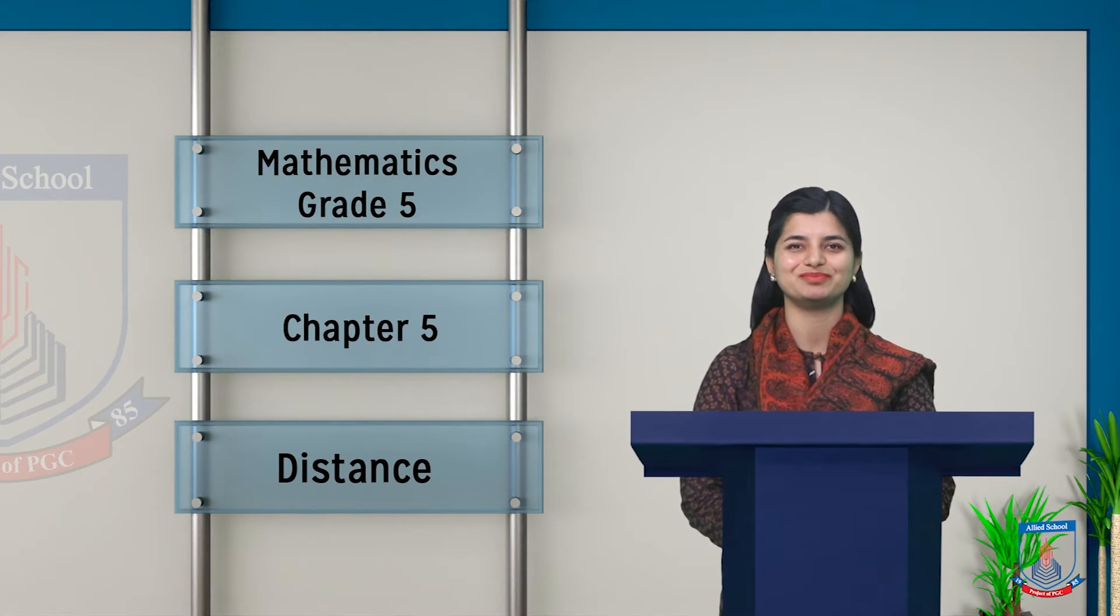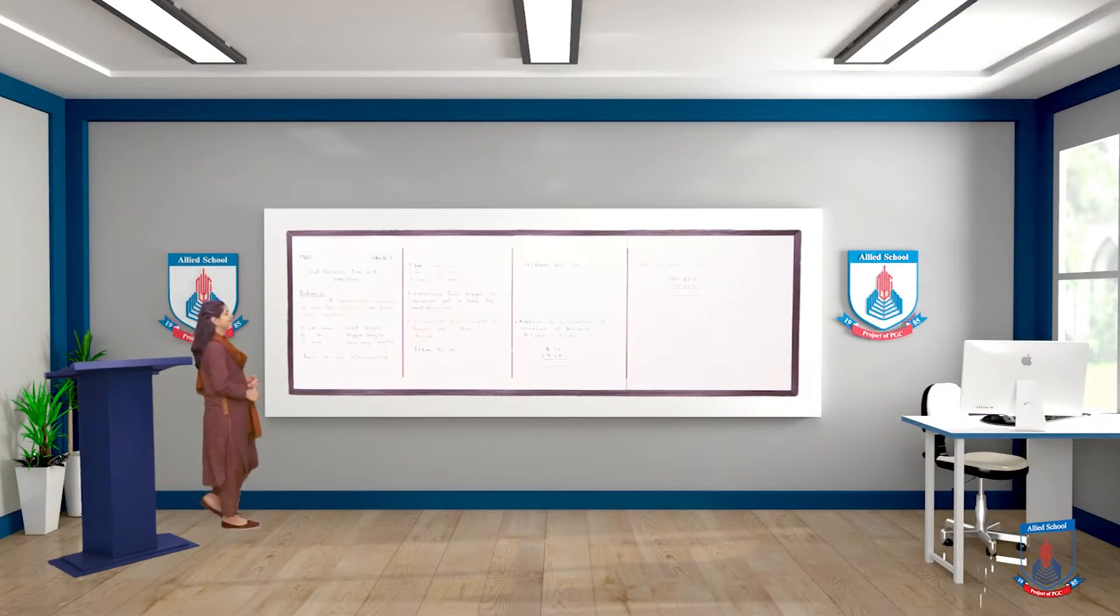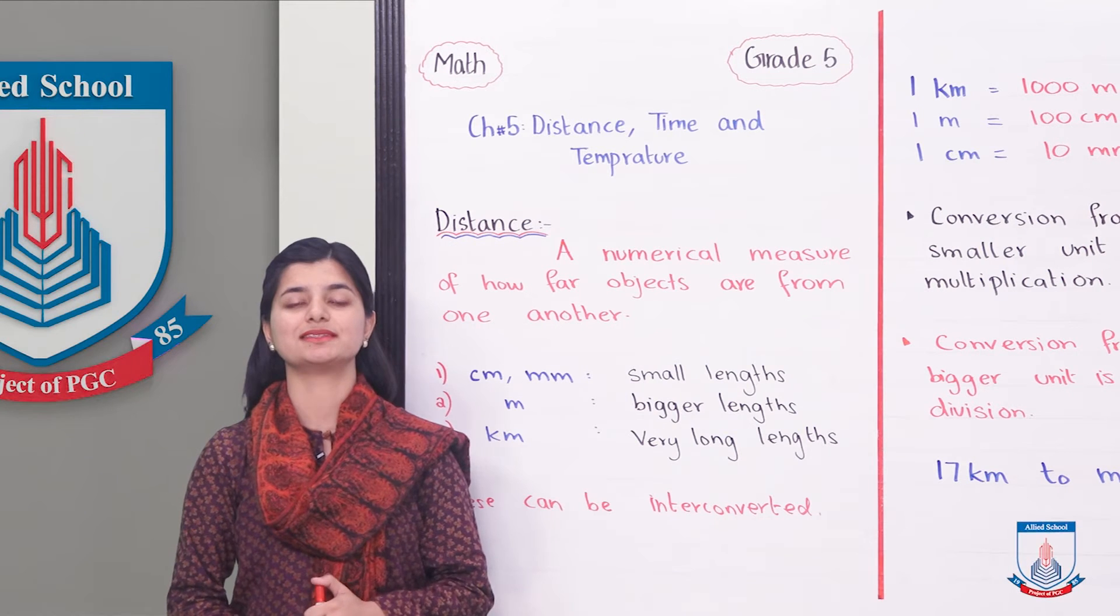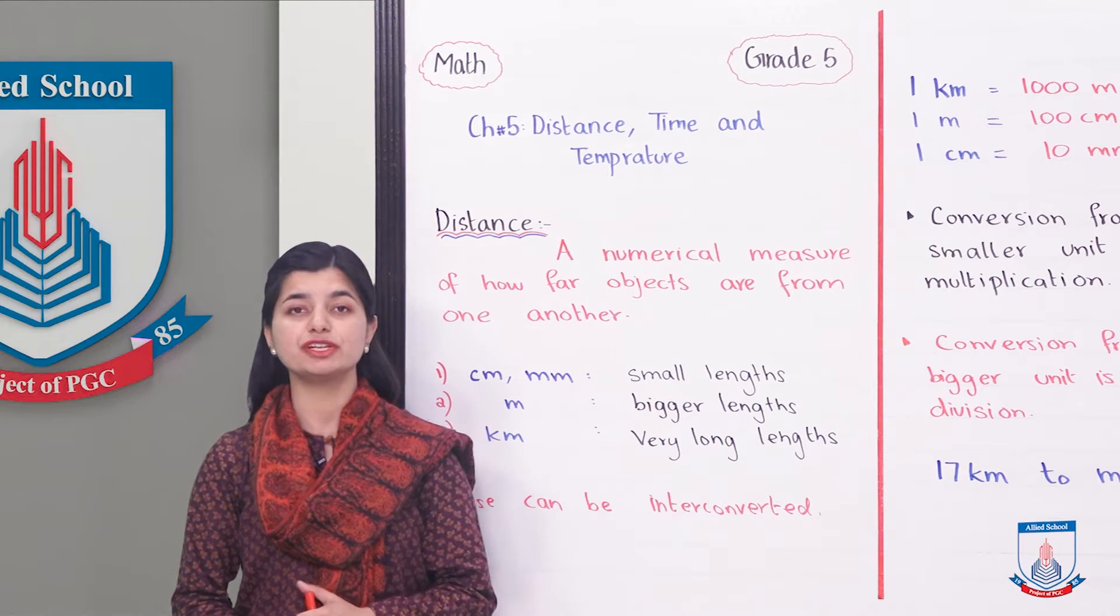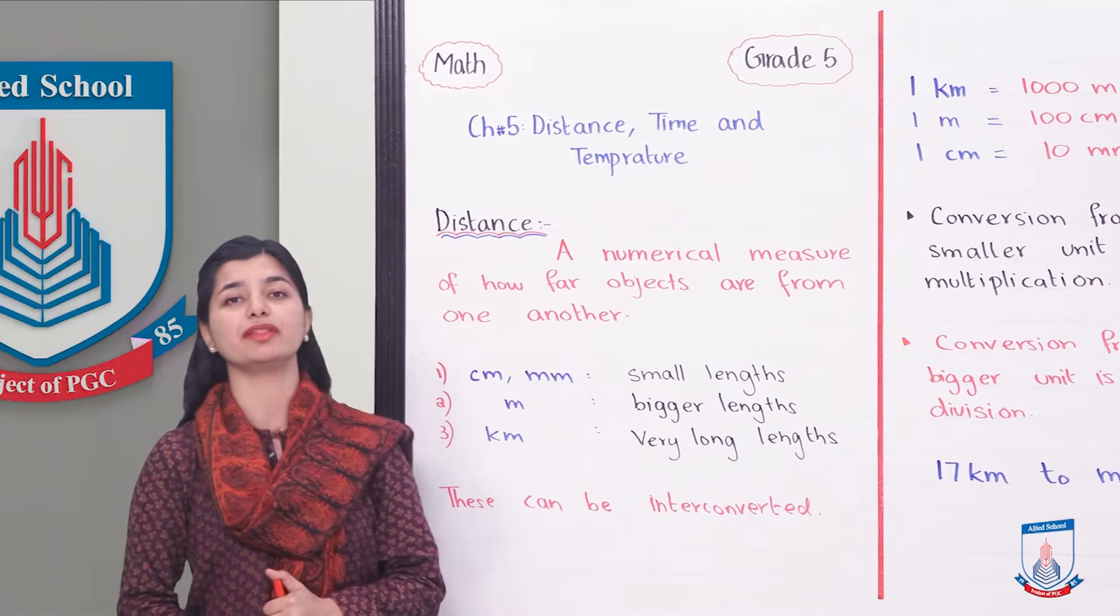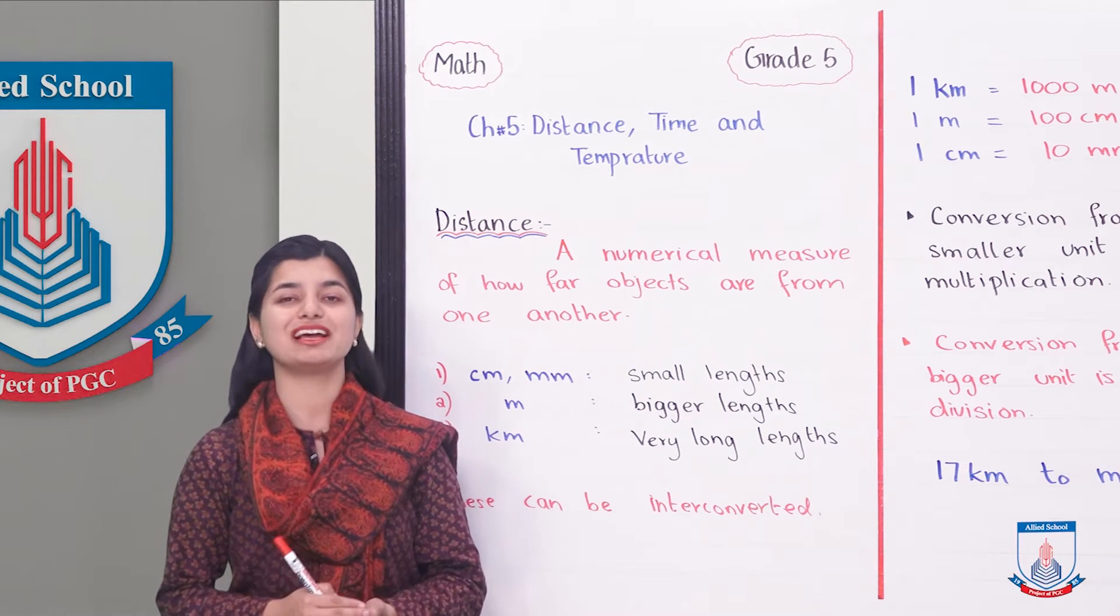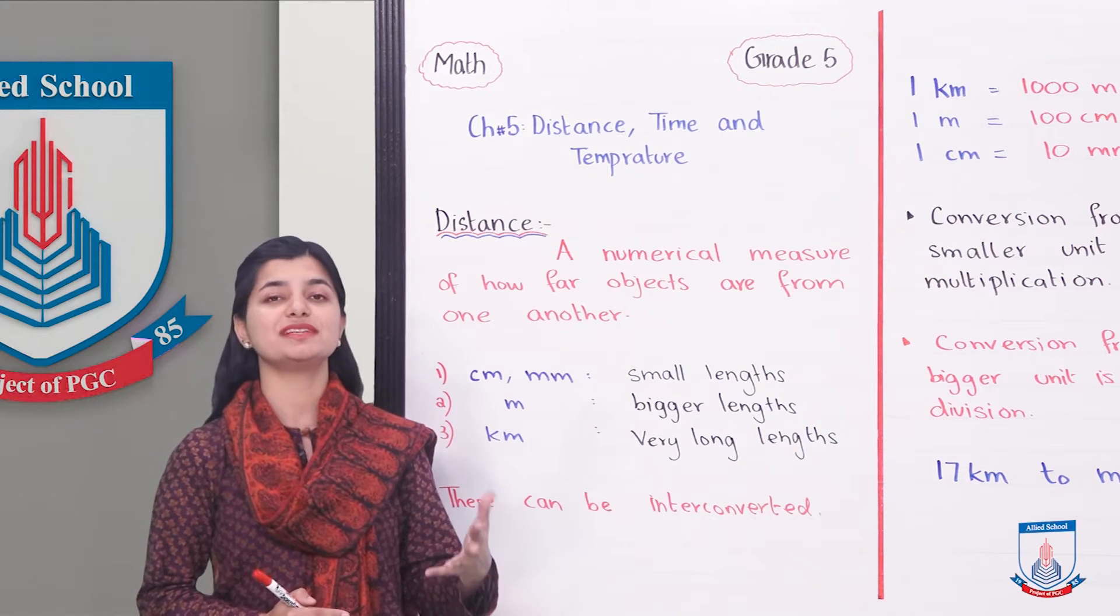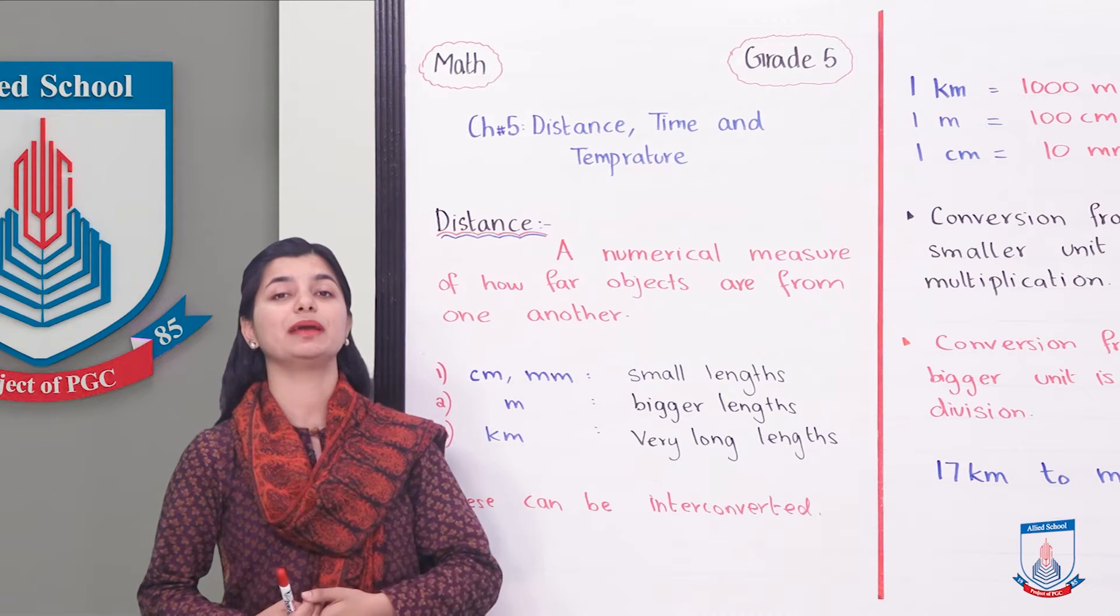Let's see them here. Distance - a numerical measure of how far objects are from one another. We can also say that one thing is the other thing that we measure by distance.